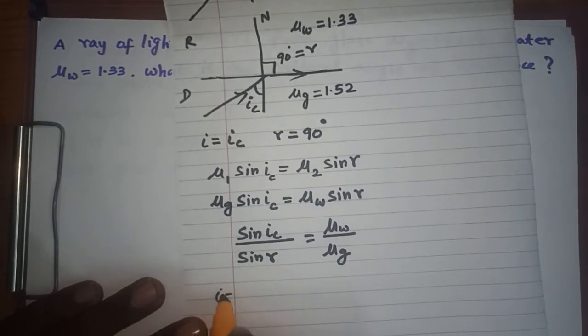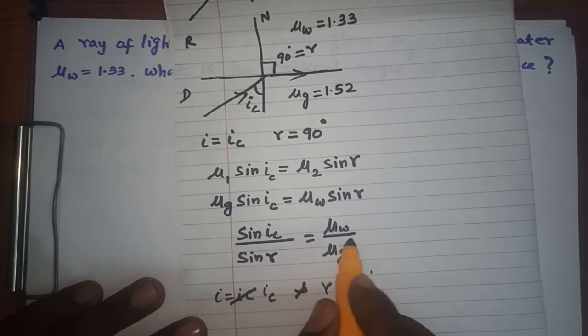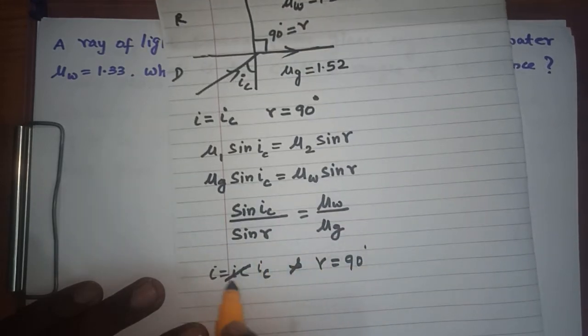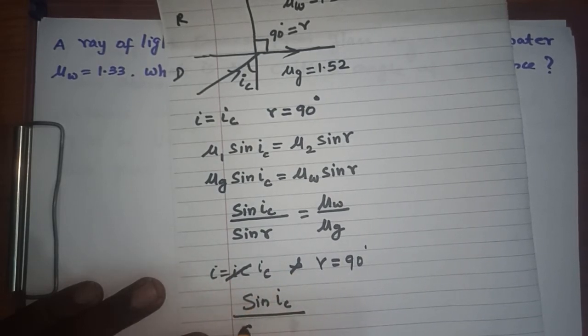The varying conditions here: i equals i_c and r equals 90 degrees. μ_w is given the value and μ_g is given the value. I'm rewriting the formula: sin i_c divided by sin r, which is sin 90, equals μ_w 1.33 divided by 1.52.